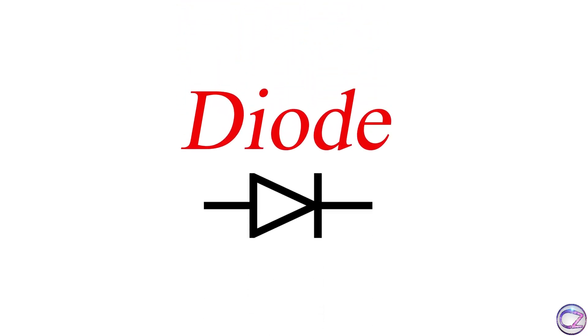Diode. It's a simple and fundamental element in electronics. Almost every electronics device is made with diodes and transistors. Time to know how a diode is made.